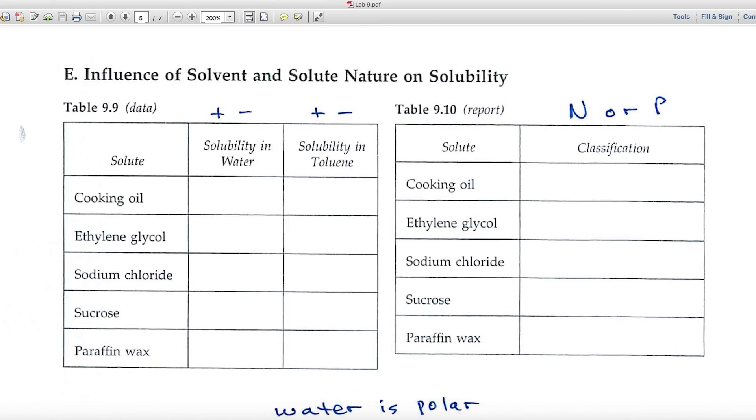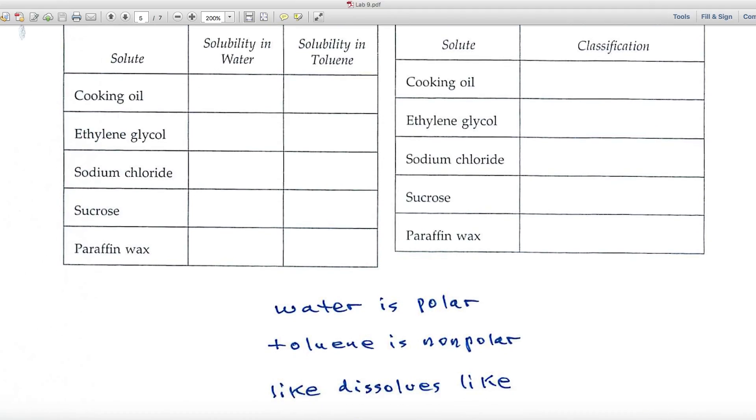And part E, the influence of solvent and solute on solute solubility. We're looking at two substances. The solubility in water, and the solubility in toluene. And I'm going to skip down to this little statement at the bottom. You know that water is polar. Toluene is nonpolar. And this is a general rule of thumb for solubility. Like dissolves like. Or sometimes we just use one word, like likes like.